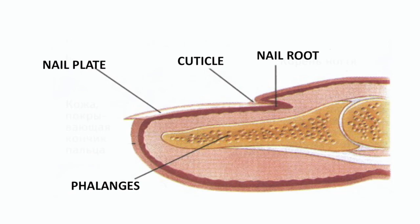This diagram covers everything we have discussed but from a slightly different angle. Let's do a quick recap: here is the root of the nail, the cuticle, the nail plate, and this is a phalanx. I hope that this lesson on the structure of the fingernail was useful for you. Don't forget that you can also view the presentation on the slides created especially for you. Until our next lesson, all the best!